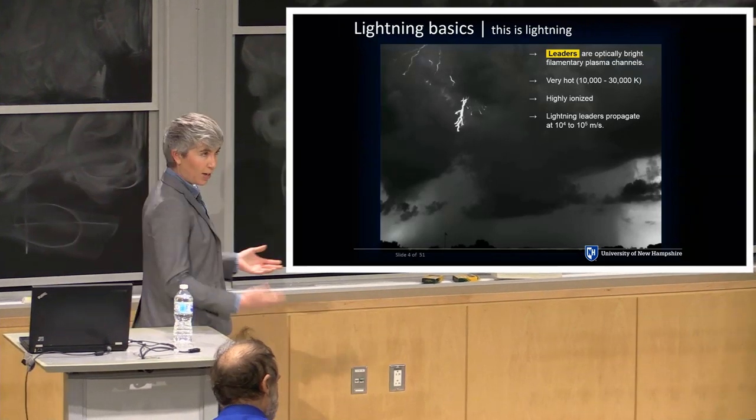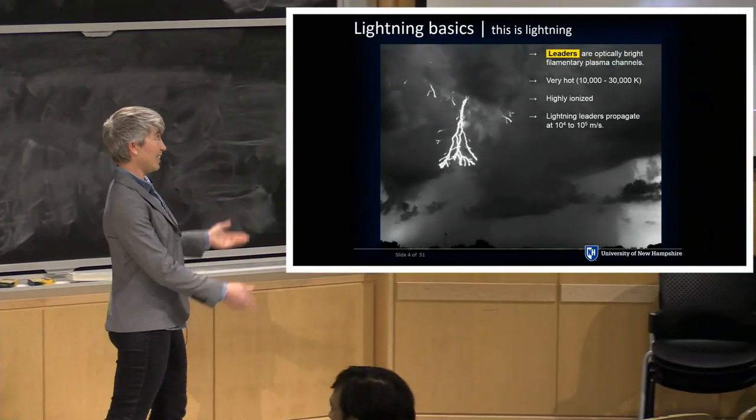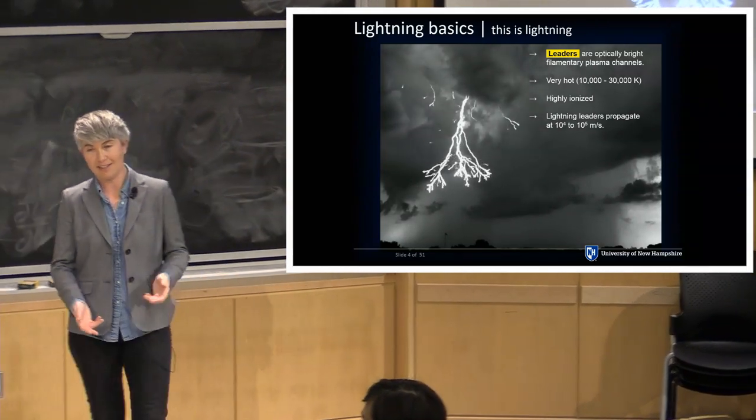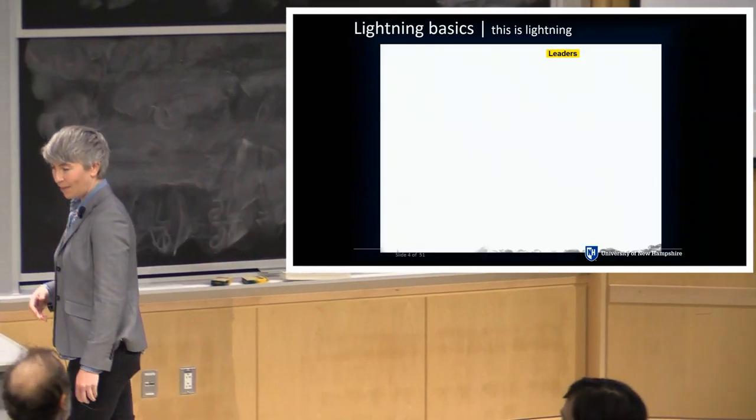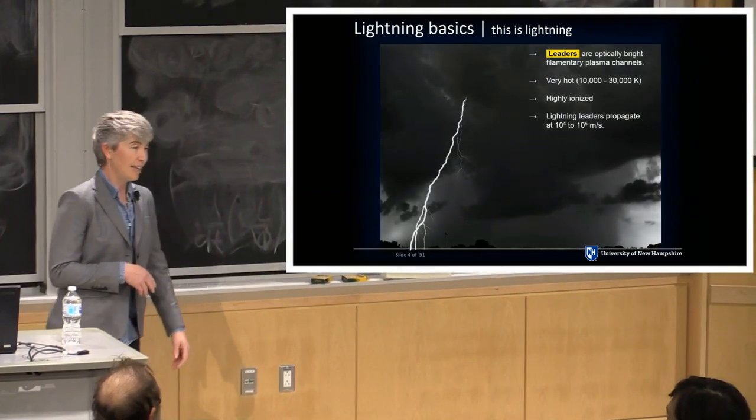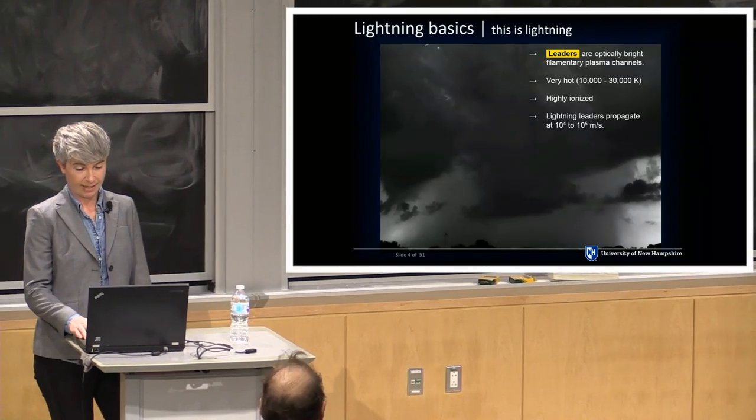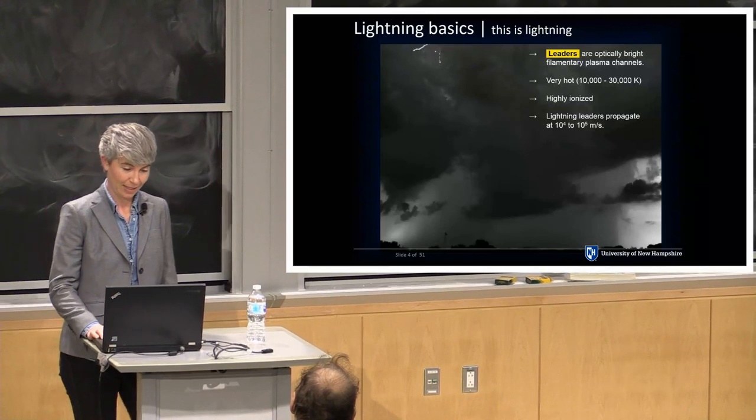So these bright channels we call leaders. Like I said, they're bright, which means they're very hot, 10,000 to 30,000 Kelvin. This is a highly ionized plasma channel, and they can propagate pretty fast, 10 to the 4th to 10 to the 5th meters per second, sometimes even 10 to the 6 meters per second.